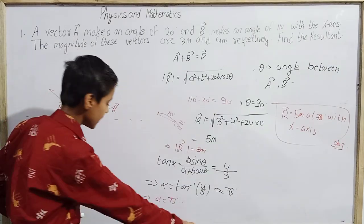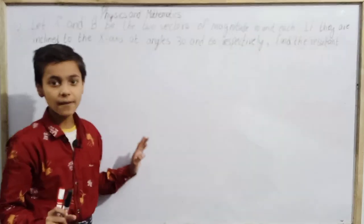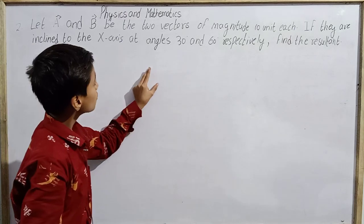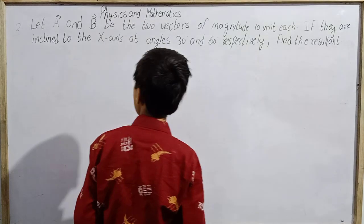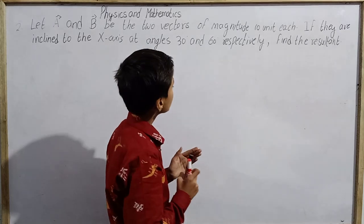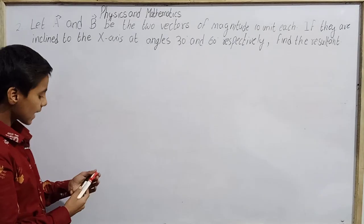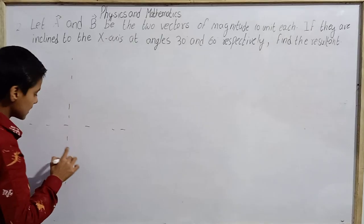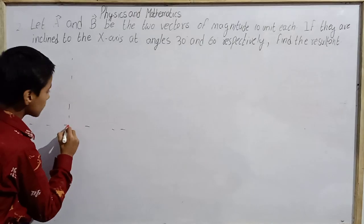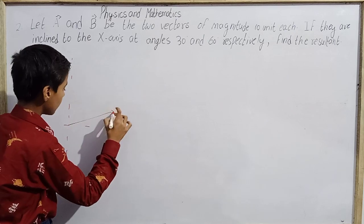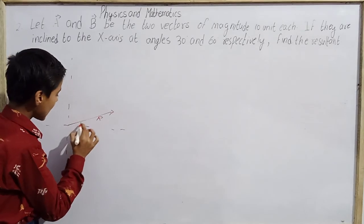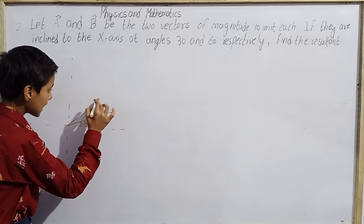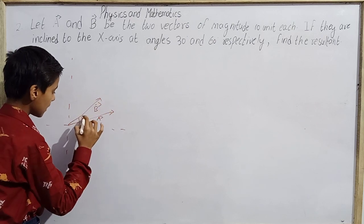We have completed question number 1 and now we move to question 2. It states: Let A and B be two vectors of magnitude 10 units each. If they are inclined to the x-axis at angles 30 degrees and 60 degrees respectively, find the resultant. Drawing the x-axis and y-axis with origin, Vector A is inclined at 30 degrees with the x-axis and Vector B is inclined at 60 degrees with the x-axis.